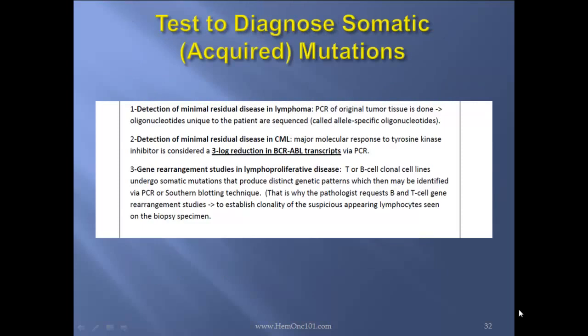Tests to diagnose somatic acquired mutations: detection of minimal residual disease in lymphoma — PCR of the original tumor tissue is done; oligonucleotides unique to the patient are sequenced, called idiotype-specific oligonucleotides. Detection of minimal residual disease in CML: major molecular response to tyrosine kinase inhibitor is considered a three-log reduction in PCR-able transcripts via PCR. Gene rearrangement studies in lymphoproliferative disease: T or B cell clonal cell lines undergo somatic mutations that produce distinct genetic patterns which may be identified via PCR using Southern blot technique. This is why the pathologist requests B and T cell gene rearrangement studies to establish clonality of suspicious-appearing lymphocytes seen on the biopsy specimen.